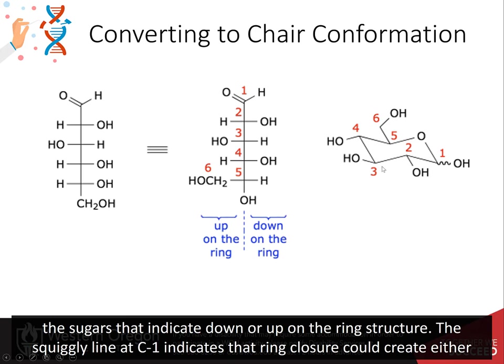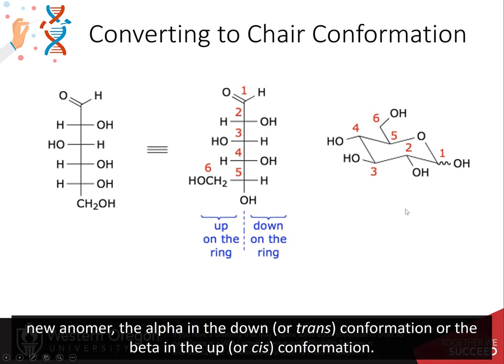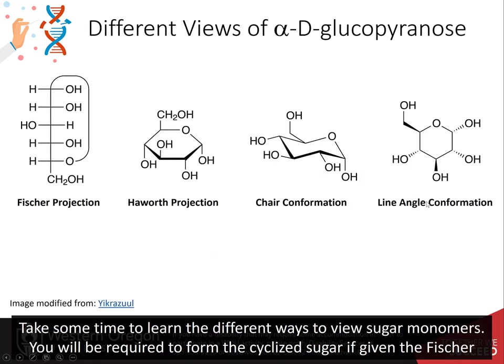The squiggly line at C1 indicates that the ring closure could create either the new anomer in the alpha, or down trans, conformation, or the beta, up, or cis conformation. Take some time to learn the different ways to view sugar monomers.